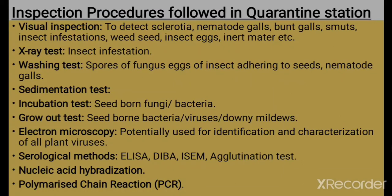Now let's talk about the inspection procedure followed in quarantine stations. First is visual inspection: we detect whether there are sclerotia, nematode galls, burnt galls, smuts, insect infestation, weed seeds, insect eggs, or inert matter present in the plant material. Second is the X-ray test, to check for insect infestation. Third is the washing test, where spores of fungi, eggs of insects adhering to seed, and nematode galls are checked. Then a sedimentation test is performed, followed by an incubation test to check whether fungi or bacteria are seed-borne.